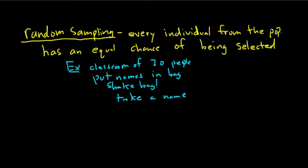So as long as you don't cheat, everyone has an equal opportunity — every single individual. That's the key word. The next definition is that of what's called Simple Random Sampling, or a simple random sample.